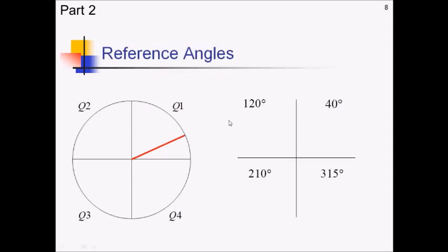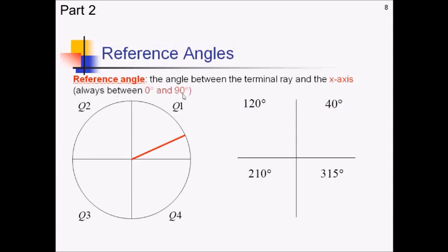We're going to switch gears now to talk about something called reference angles. A reference angle is the angle between the terminal ray, that's your moving angle ray there, and the x-axis. So because we're doing basically the angular distance, you could think of it as, between the ray and the axis, you're always going to have a reference angle between 0 and 90 degrees. And this is going to be a very useful property for what we're doing later on.